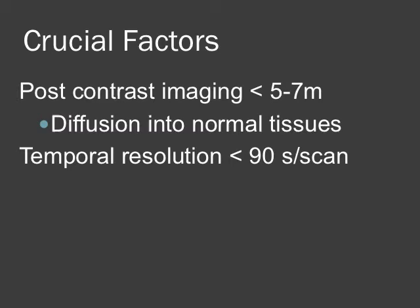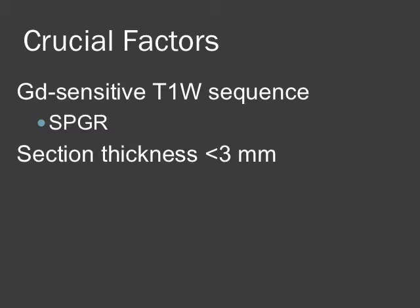You want to obtain all imaging within about five to seven minutes after contrast injection, because after that the gadolinium diffuses into normal tissues and can obscure the abnormality. There also needs to be a certain temporal resolution — each scan needs to be completed in under about 90 seconds. You need to obtain a gadolinium-sensitive T1-weighted sequence such as SPGR, with some form of fat suppression, with section thickness no more than three millimeters and ideally closer to two millimeters.